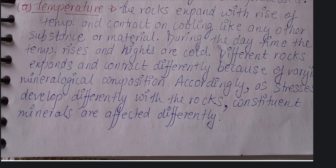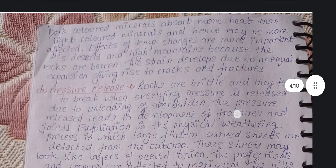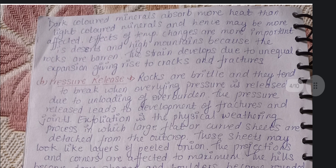Different rocks behave differently under the impact of temperature because of their different mineralogical composition. Dark-colored minerals absorb more heat than light-colored minerals and hence may be more affected. The effects of temperature changes are more important in deserts and high mountains because the rocks there are barren, and the strain developed due to unequal expansion gives rise to cracks and fractures.